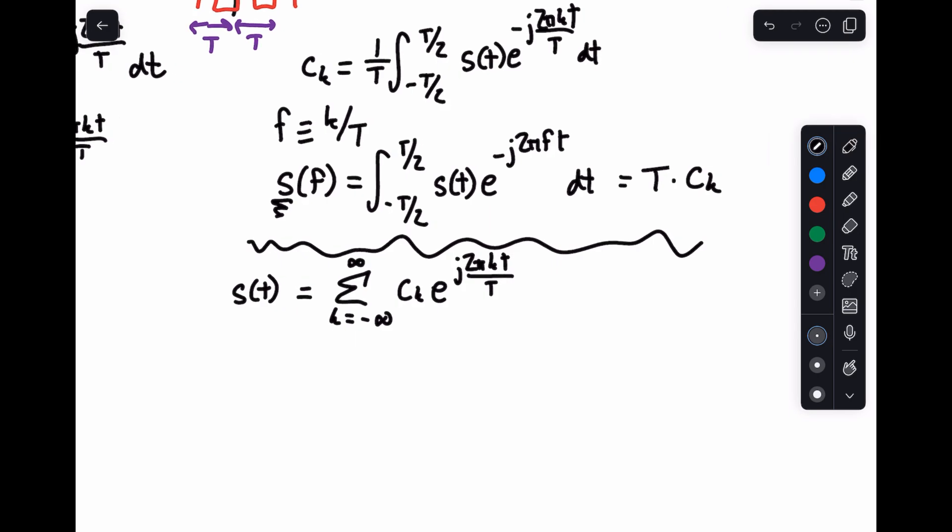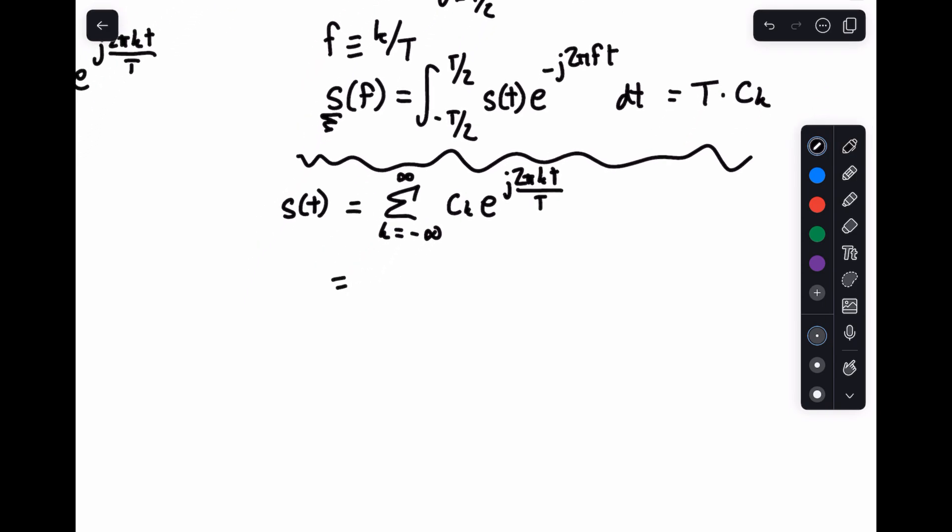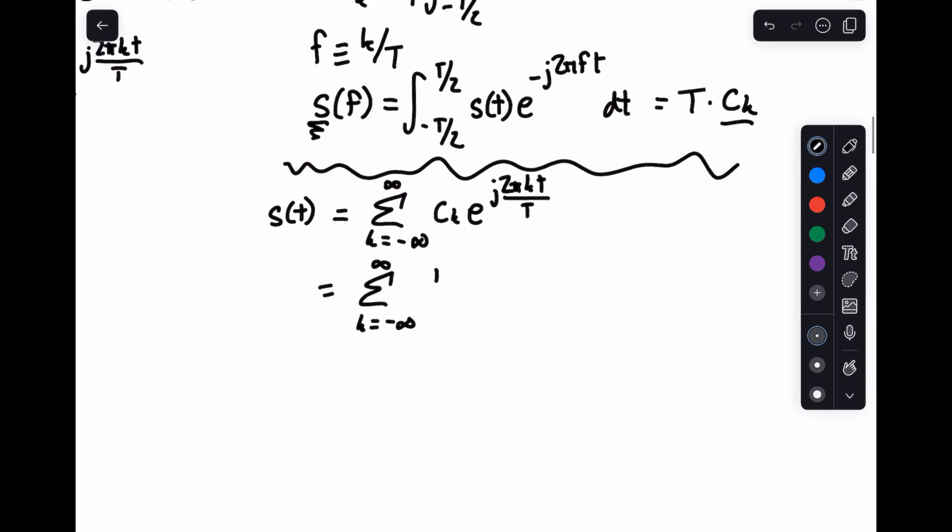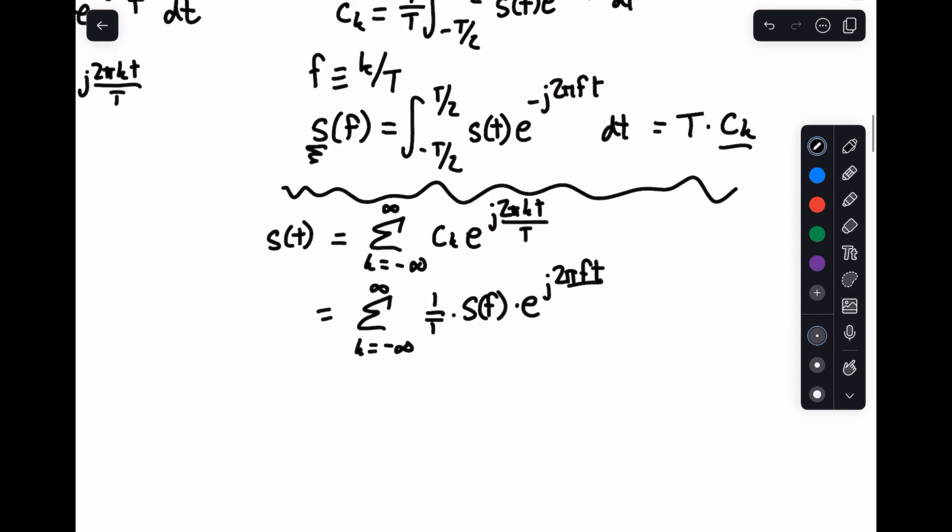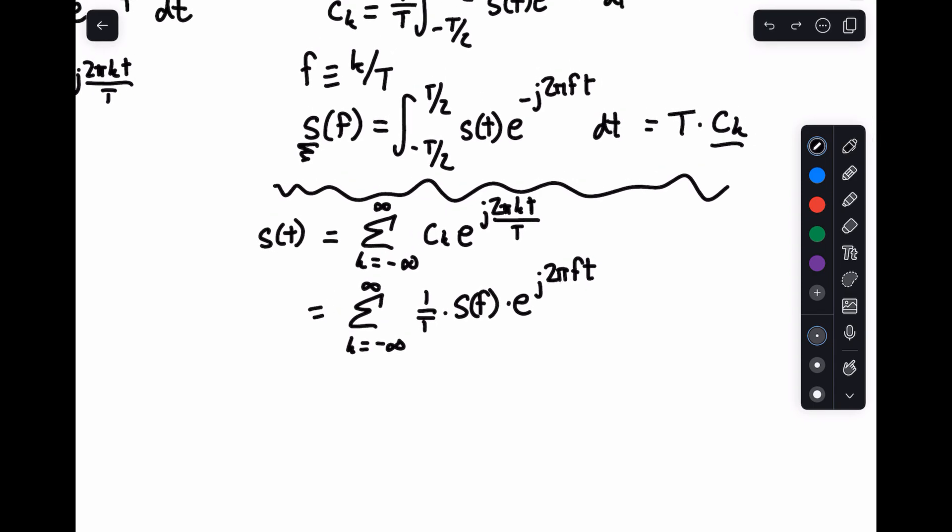Now what I'm going to do is instead of c sub k, I'm going to write this as a function of our frequency value f. So if I substitute in c sub k, I will need to divide both sides. So I have the sum from k equals minus infinity to infinity of 1 over T times S(f) e to the j 2π ft. We don't need over T now because we have f.